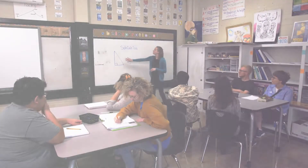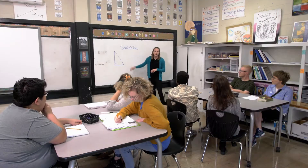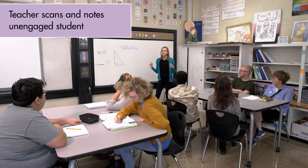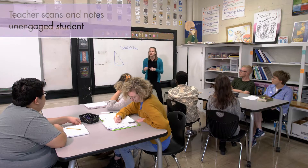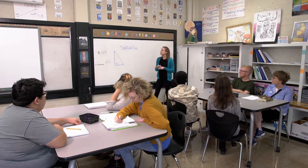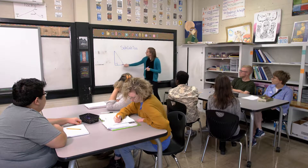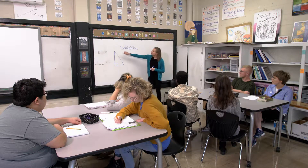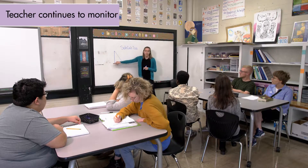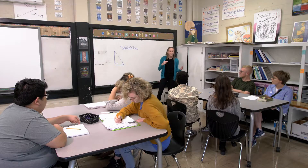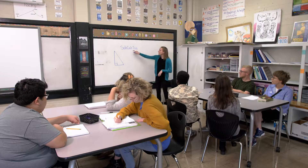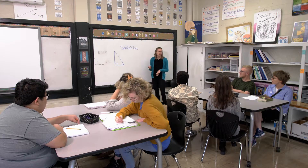We've spent a lot of time talking about the right triangle, and now is the time when we're going to connect that to what we know about the trigonometric functions — functions that help connect the inside angles of a triangle with the lengths of the sides. To do this and help us remember the relationship between the sides and the angles, we have this phrase called SOHCAHTOA.